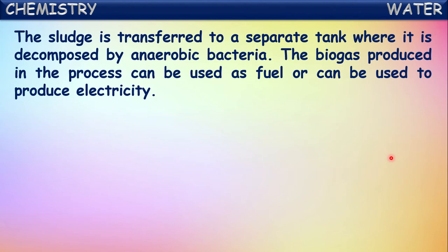The sludge is transferred to a separate tank where it is decomposed by anaerobic bacteria. The biogas produced in this process can be used as fuel or to produce electricity. The sludge is sent into separate tankers where anaerobic bacteria decompose it, producing biogas.